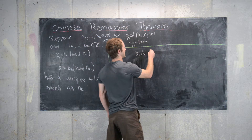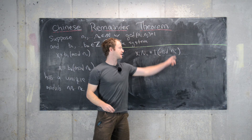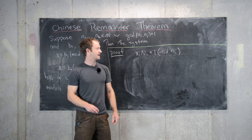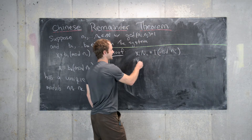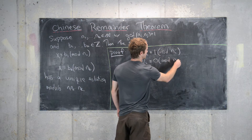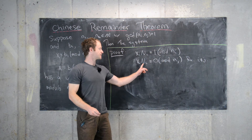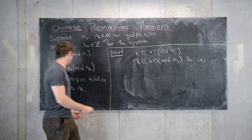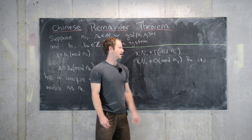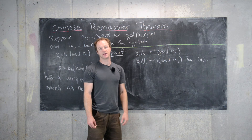By our construction we have x_i · N_i ≡ 1 mod n_i, which holds because capital N_i and little n_i are relatively prime, so N_i has a modular inverse mod n_i. Also notice that if we take capital N_i times x_i, that is congruent to 0 mod n_j for i not equal to j. This is because capital N_i is the product of all the n's except n_i, which means it is a multiple of n_j, and is therefore congruent to 0 mod n_j. This holds for all i and j between 1 and k.